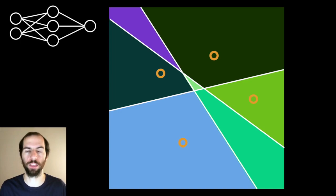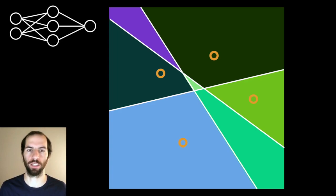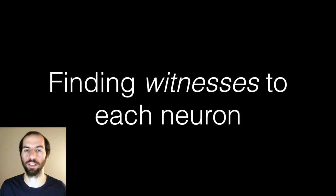Once we have the first layer with the signs extracted correctly, we can extract the second layer trivially because it's just a linear function — we directly compute with least squares and solve for the second layer. That's how prior work did this, up to the point that we need to find witnesses to these critical points on these hyperplanes.